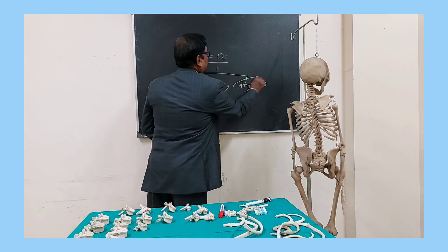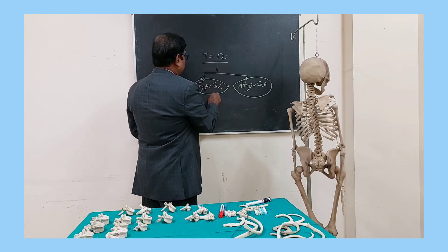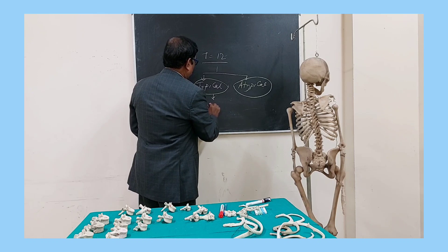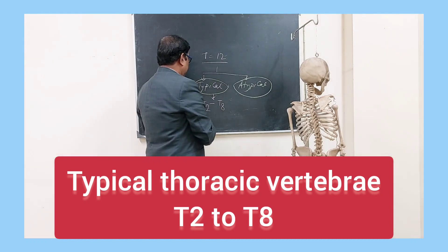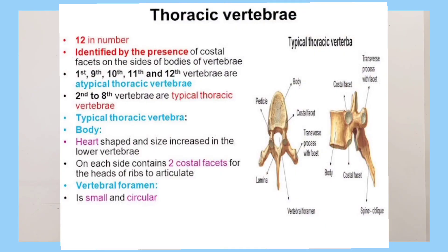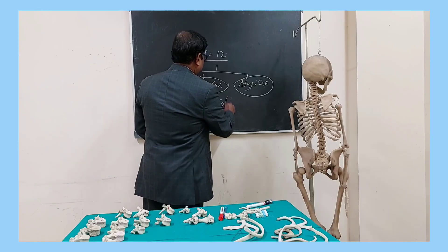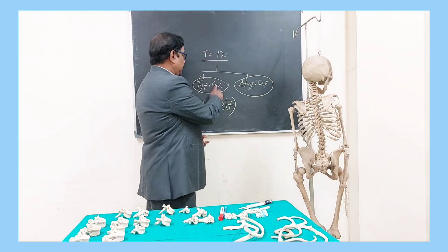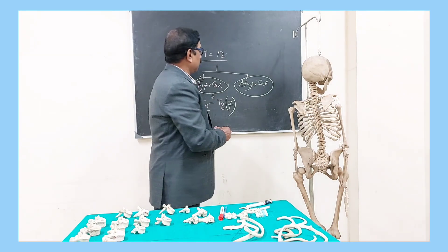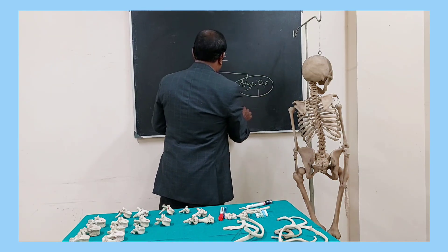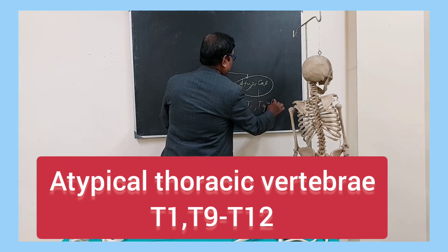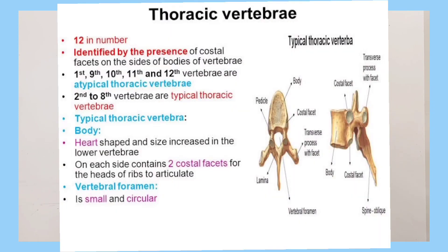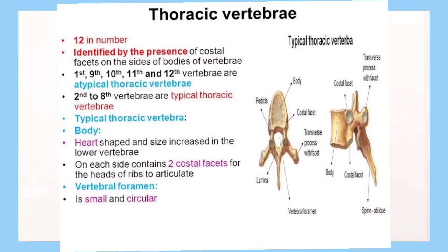So how many are typical and how many are atypical thoracic vertebrae? Typical vertebrae start from T2 to T8 — that is T2, T3, T4, T5, T6, T7, and T8 — a total of 7 vertebrae are typical. These vertebrae all share the same anatomical features. The atypical vertebrae are the rest: T1, then T9 to T12. These 5 vertebrae are atypical, each having different anatomical features.